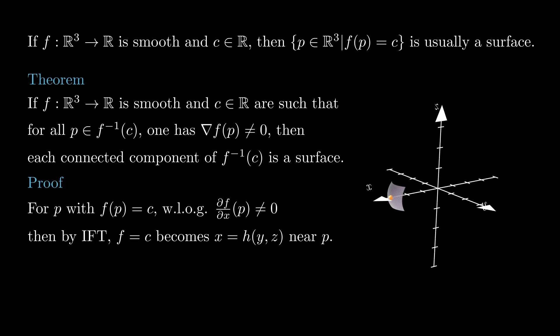So by the implicit function theorem, in a neighborhood of p we can write z as a smooth function in terms of x and y. Since p is arbitrary, this shows that each connected component of the level set f equals c is a smooth surface.